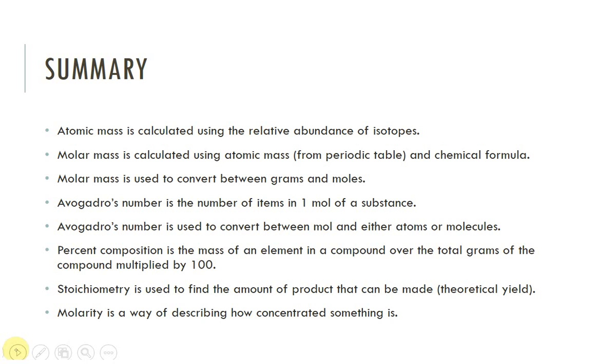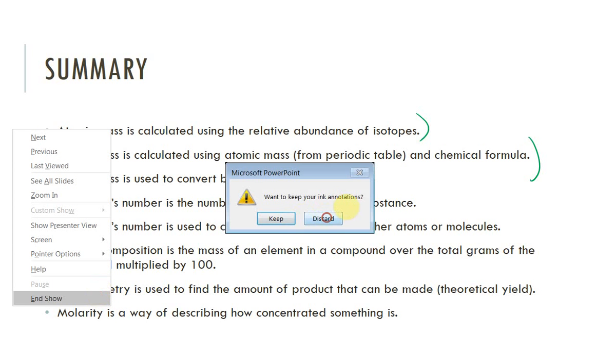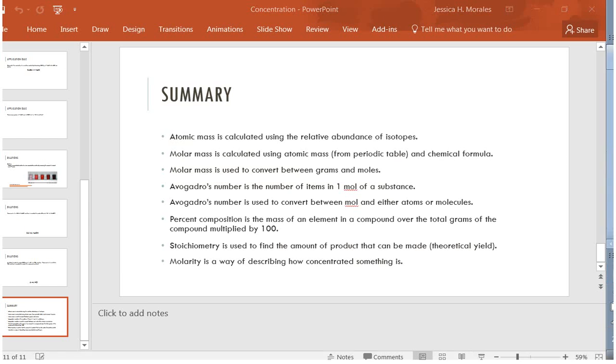So, in this unit, we've talked about how to find the atomic mass. We've calculated the molar mass. We've used molar mass to go between grams and moles. We used Avogadro's number to go between moles and either molecules or atoms. We've calculated the percent composition. We've done some stoichiometry. And we've dealt with concentration. So, we've really addressed a lot of mathematical concepts here. But let me know if you have any questions. All right. Let's do this. I'll see you next time.